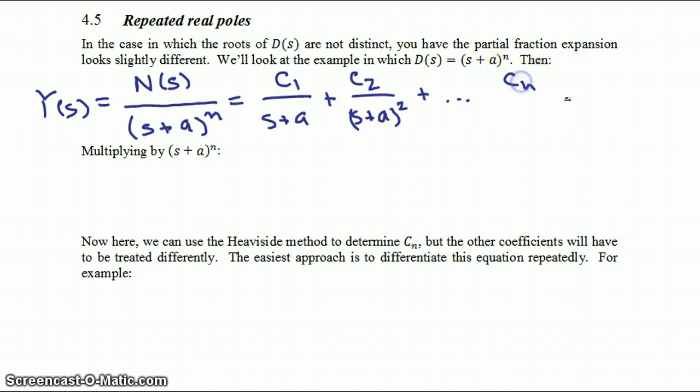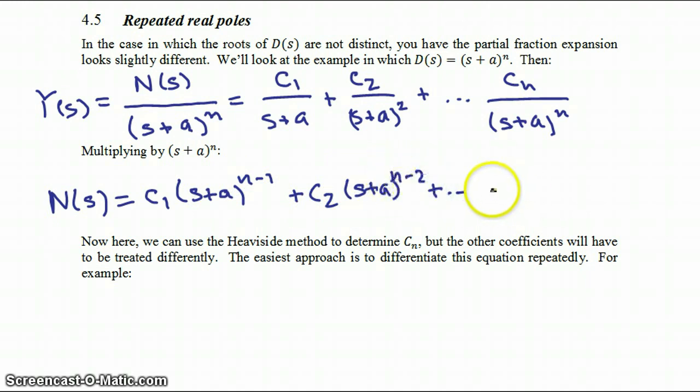Now if we multiply through by s plus a to the nth, then we end up with our numerator equal to C1 times s plus a to the n minus 1, plus C2 times s plus a to the n minus 2, plus Cn minus 1 times s plus a to the first power, plus Cn.